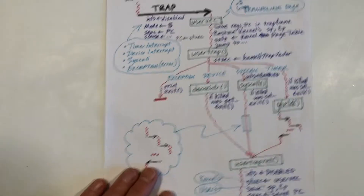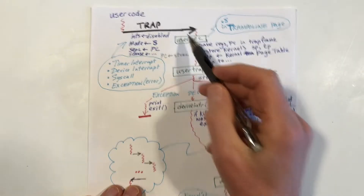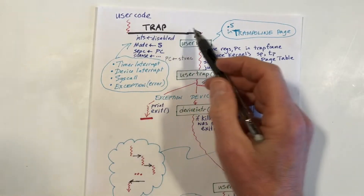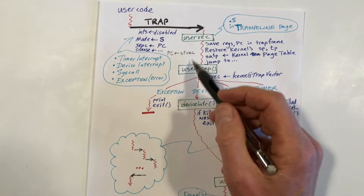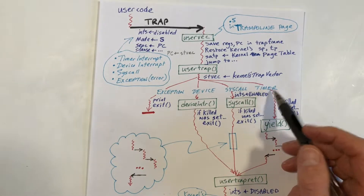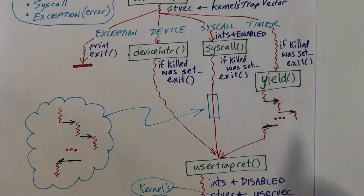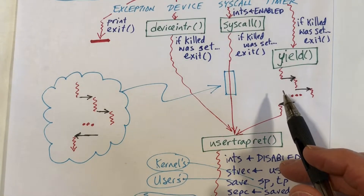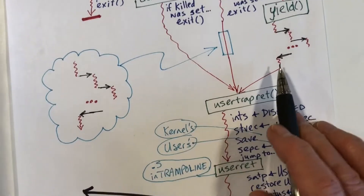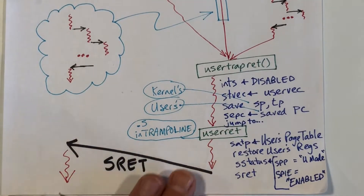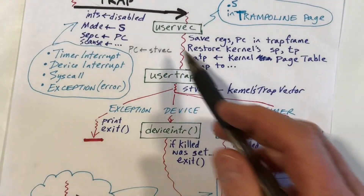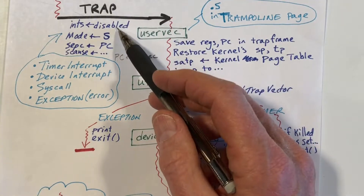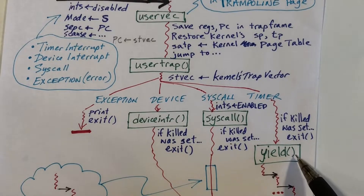Now let's take a look at this roadmap that we showed earlier. This shows everything that happens between the trap and the SRET instruction. User code is being executed, and we get a trap. In the case of a timer interrupt, we will call the yield function. One thing to notice is that when the trap occurs, interrupts are disabled, and along this path where we call yield, interrupts remain disabled.